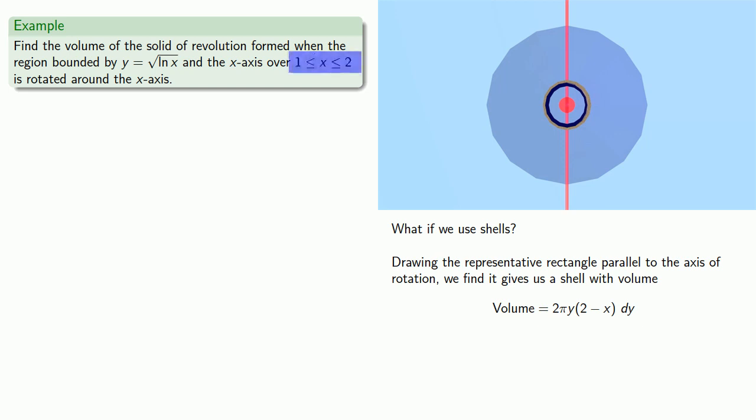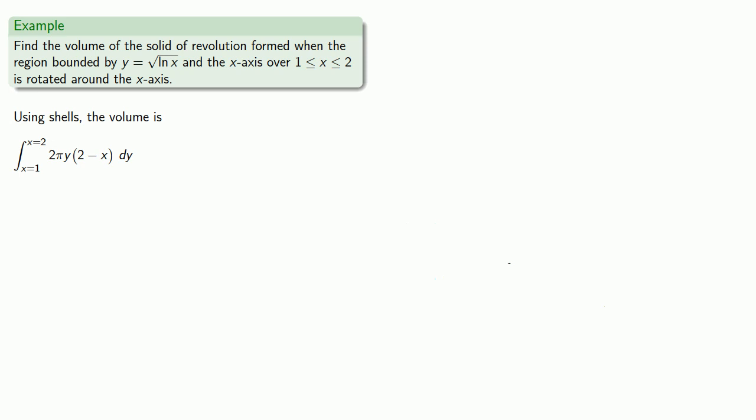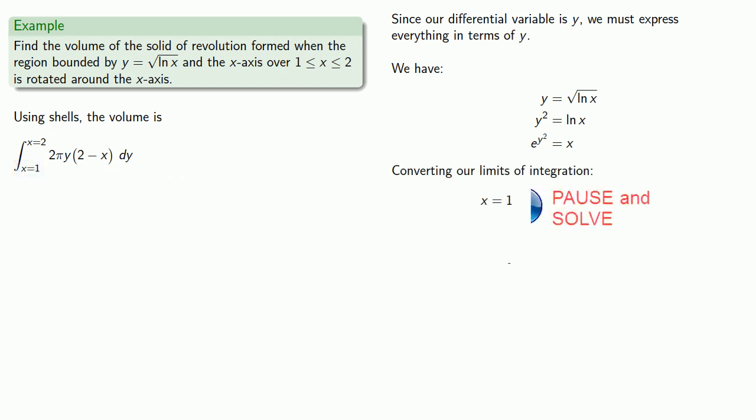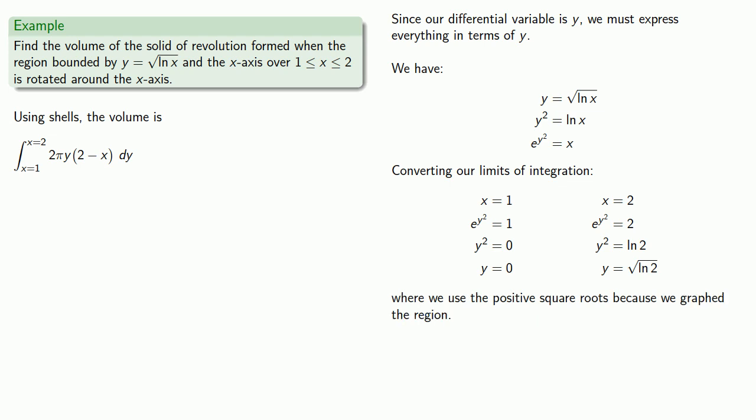Since we're going from x equals 1 to x equals 2, we'll sum these volumes from x equals 1 to x equals 2. Since our differential variable is y, we must express everything in terms of y. So we need to express x in terms of y. From y equals square root log x, we find that x is equal to e to the y squared. We also need to convert our limits of integration. Our lower limit x equals 1 is going to be y equals 0, and if x equals 2, then y equals square root log 2, where we use the positive square roots because of the graphed region.